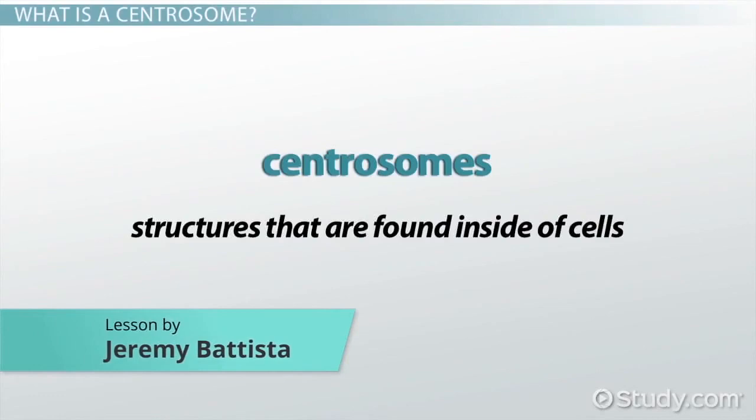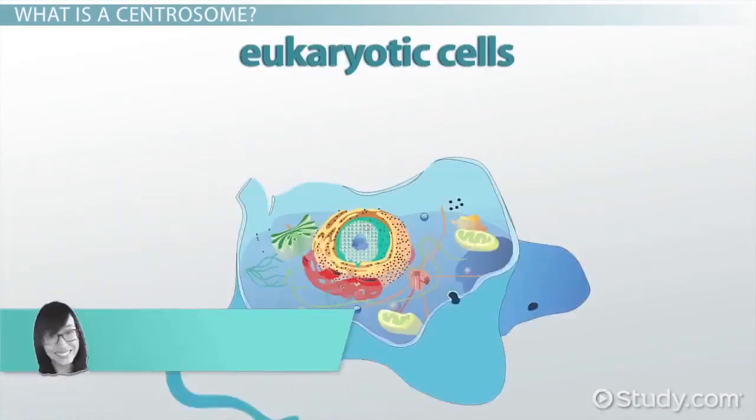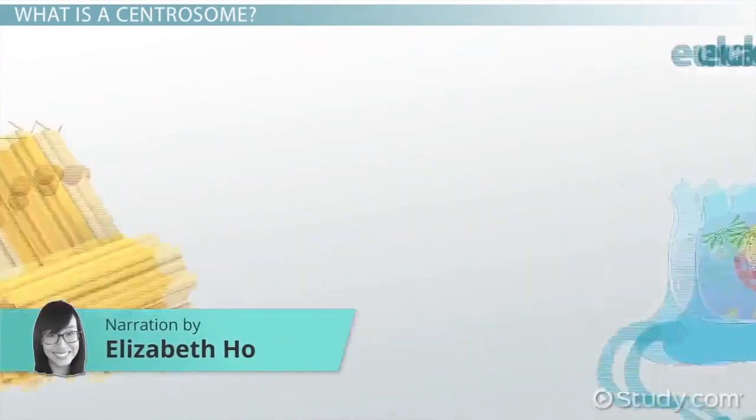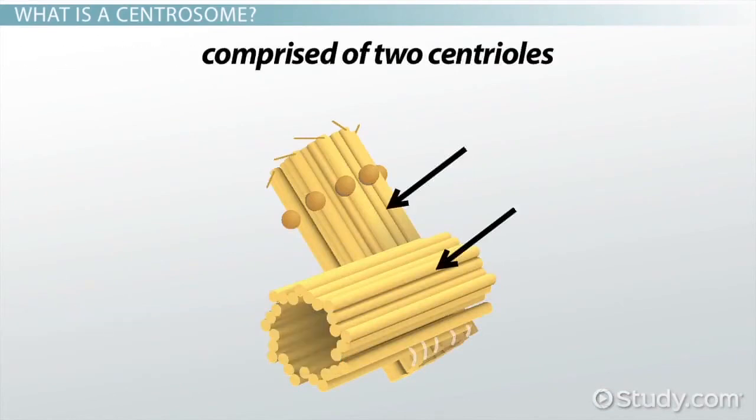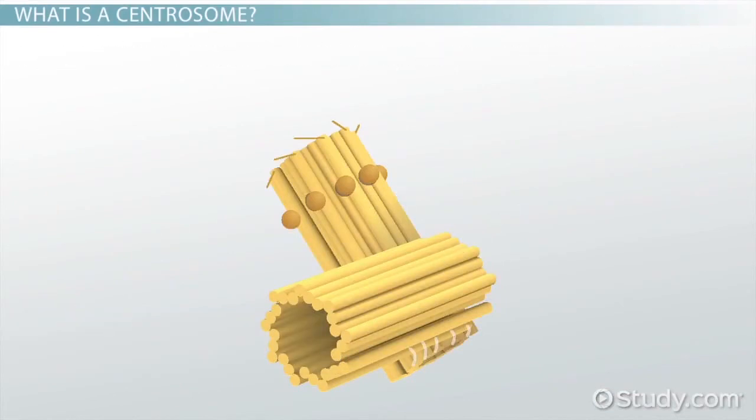Centrosomes are structures found inside of cells. They are only found inside of eukaryotic cells. Centrosomes are comprised of two centrioles, which are essentially rings of microtubules.